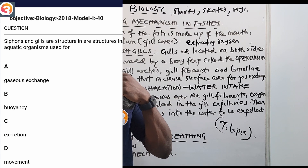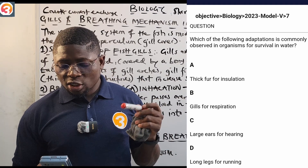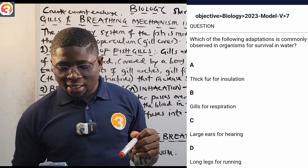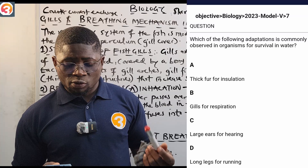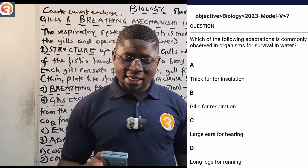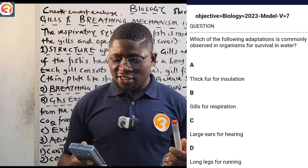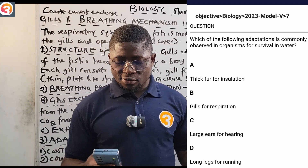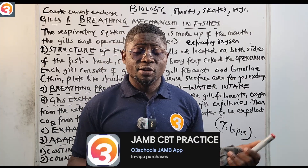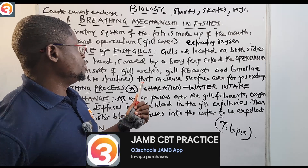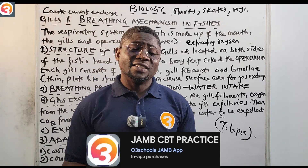For 2023 number seven: 'Which of the following adaptations is commonly observed in organisms for survival in water?' — (A) thick fur for insulation, (B) gills for respiration, (C) large ears for hearing, (D) long legs for running. The correct answer is option B, gills for respiration. There are many more questions on this topic in the app, so please download the O3 School JAMB app and activate it.